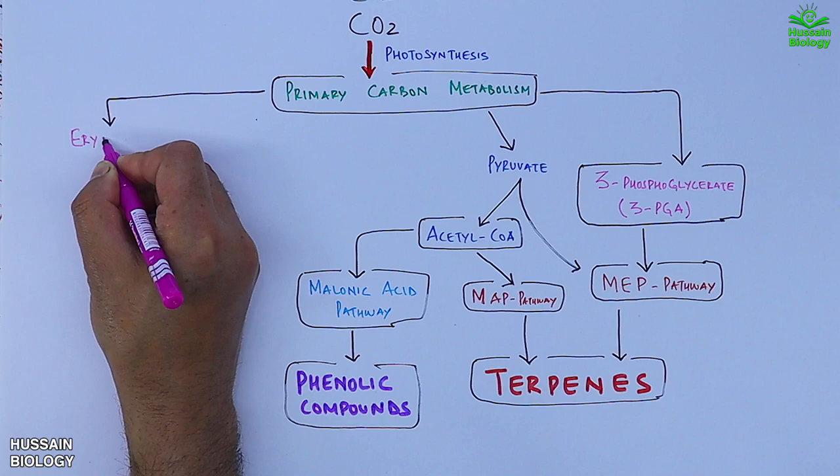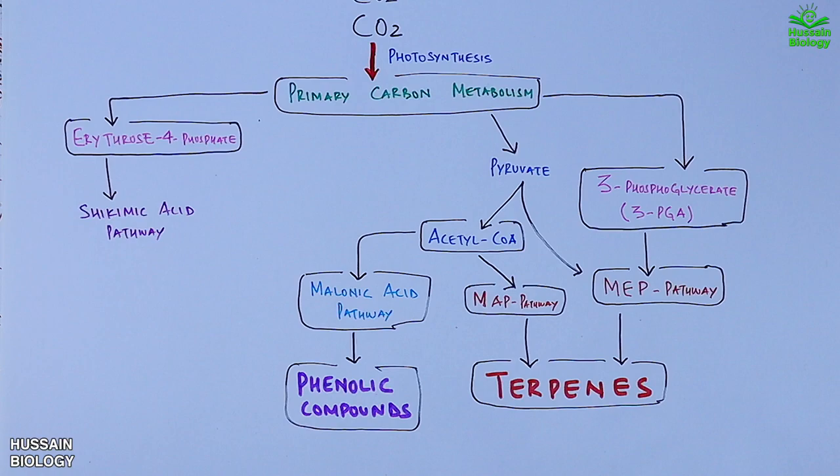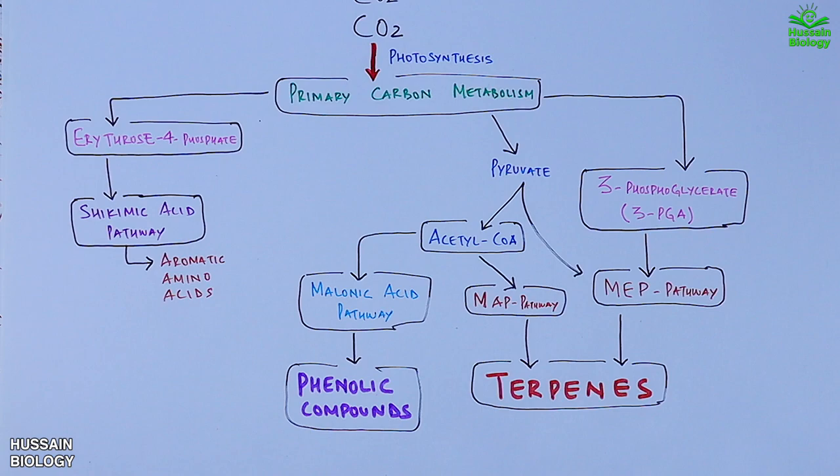From this shikimic acid pathway we get the synthesis of aromatic amino acids that eventually makes us the nitrogen-containing secondary metabolites. Even this shikimic acid pathway generates phenolic compounds.